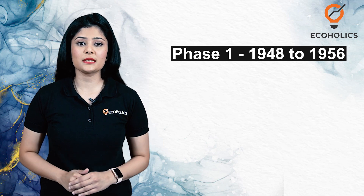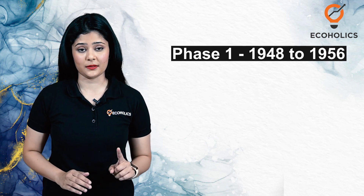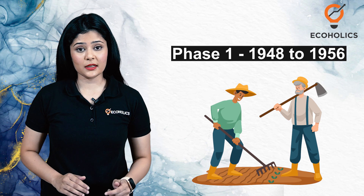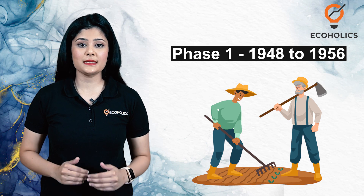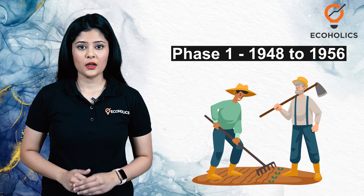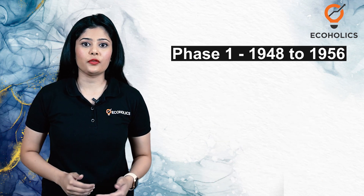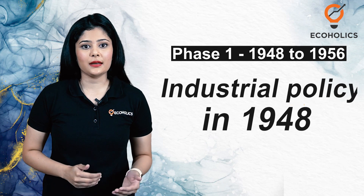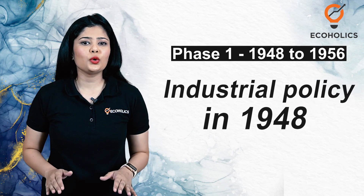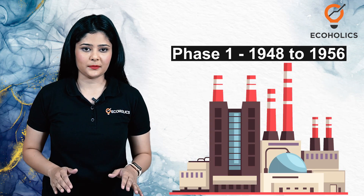During Phase 1, due to limited resources, India could only focus on one sector. Policy makers chose agriculture to provide the basic necessities to the people of India. So this phase did see the launch of industrial policy in 1948, but not much growth took place during this phase in the industrial sector.